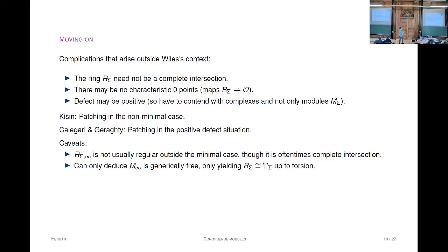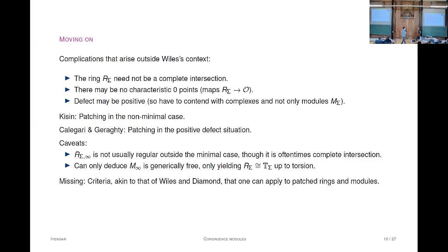One can only deduce in this context that, even if a maximal Cohen-Macaulay module estimates on the support tell you M is generically free—free after inverting the uniformizer of the DVR—that's enough to prove R equal to T up to torsion, but you don't get R equal to T on the nose. What was missing is a criterion akin to that of Diamond-Wiles that allows you to go from the patch ring in the non-minimal situation.